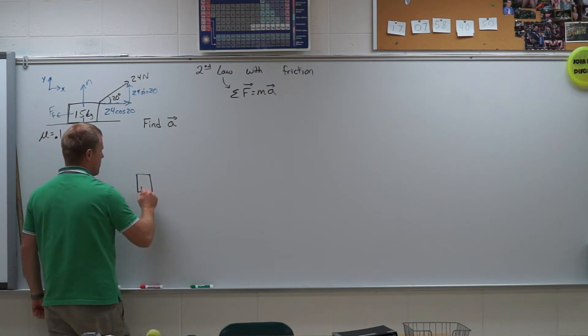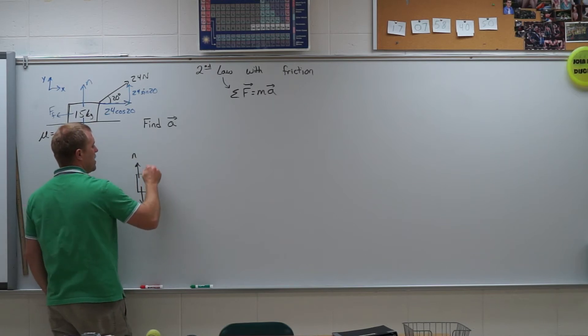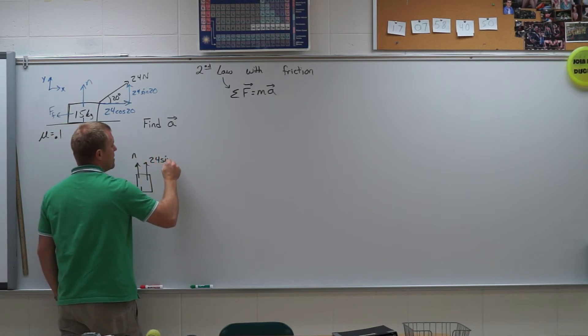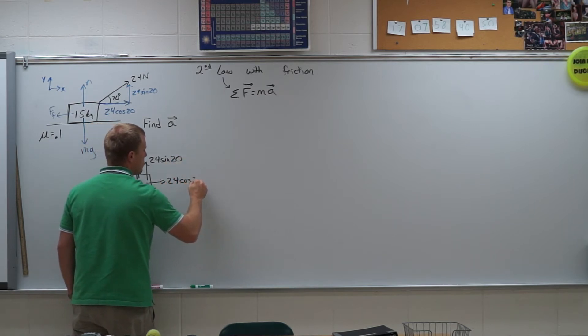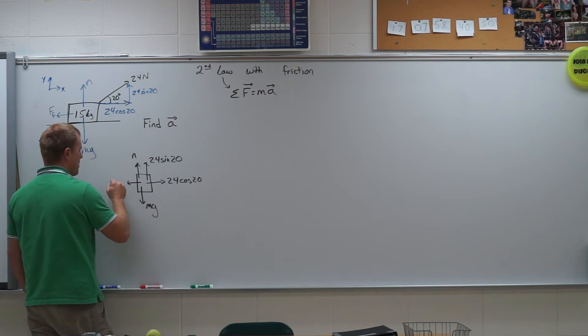So here we go. We have mg acting down. We have the normal force acting up. We have 24 sine of 20 acting up. We have 24 cosine of 20 acting to the right. And we have the force of friction acting to the left.